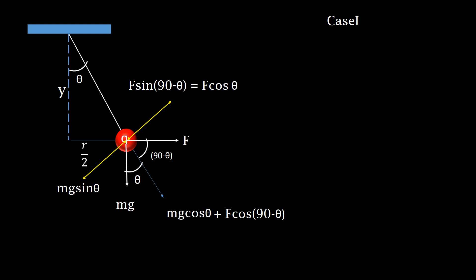The perpendicular component of electrical force is F sin of 90 minus theta which equals F cos theta. Note, mg sin theta and F cos theta act on the ball in opposite directions. So equilibrium is achieved. We can now have an equation as mg sin theta equals F cos theta.